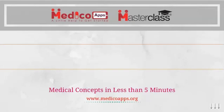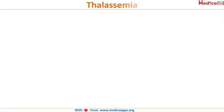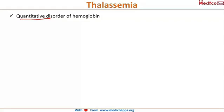We are going to discuss about beta thalassemia. Before proceeding into the main topic, let us first discuss the basics of thalassemia. Thalassemia is a quantitative disorder of the hemoglobin — whenever there is a quantitative decrease in the globin chain synthesis of the hemoglobin, these disorders are called quantitative disorders, and the common example for this condition is thalassemia.